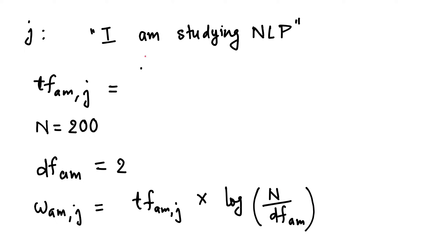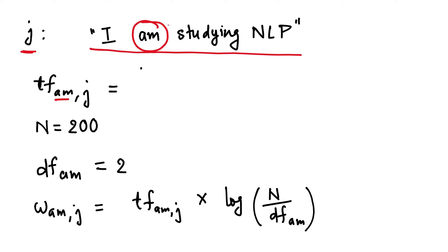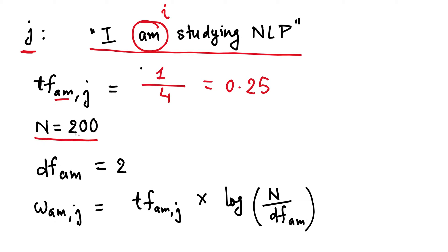Let's look at an example. The j-th document in a given corpus is: 'I am studying NLP.' First we need to calculate TF of 'am' — so term i is 'am'. It occurs just one time here, divided by the total number of words: 1, 2, 3, 4 — so it's 1 divided by 4, which is 0.25. N is 200, so this corpus contains 200 documents.